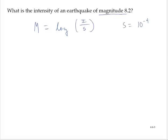We have a magnitude of 8.2. So we can write the equation as 8.2 is equal to the logarithm of i, we don't know the intensity, over 10 to the negative fourth.